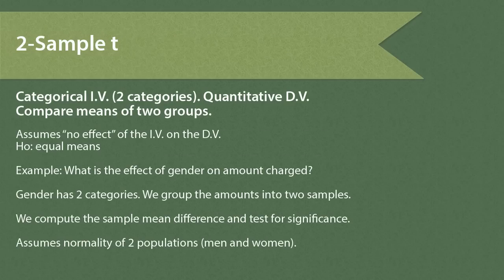The two-sample T. This technique uses an independent variable that's categorical and typically has two categories. Our dependent variable is quantitative, so we're creating two groups of the dependent variable, grouping those quantitative data by category of independent variable. The two-sample T test typically assumes no effect of the IV on the DV — in other words, H0 is that both population means are equal. For example, what is the effect of gender on amount charged?